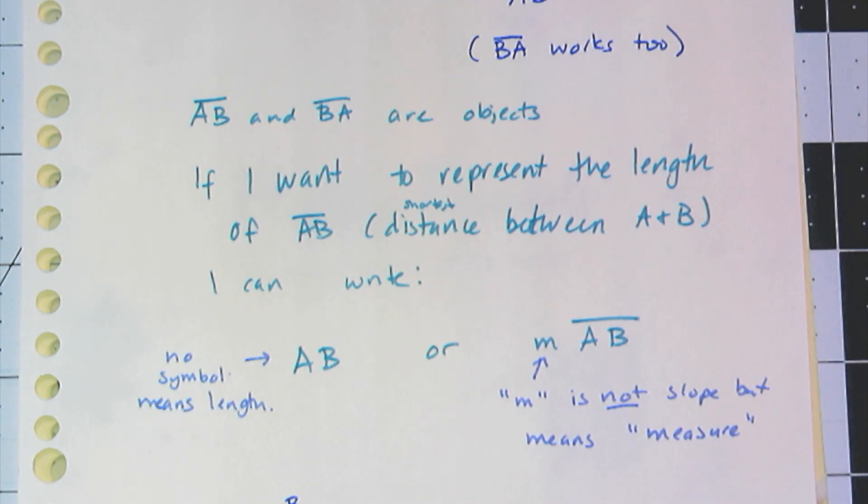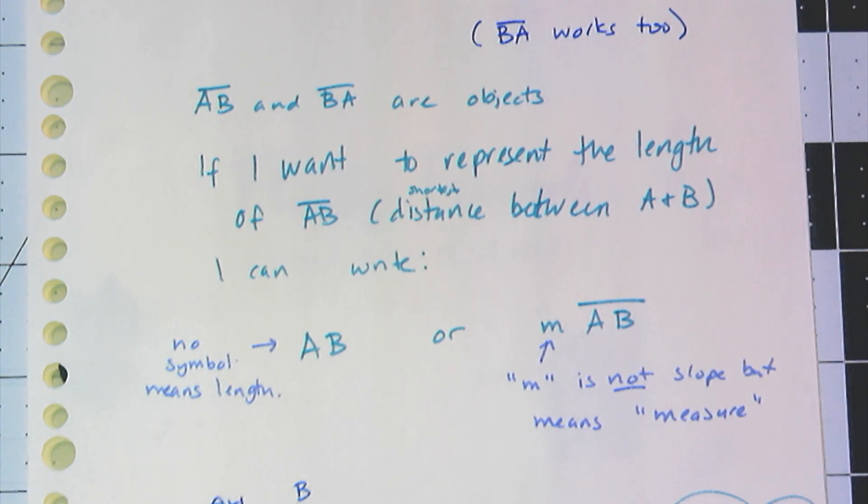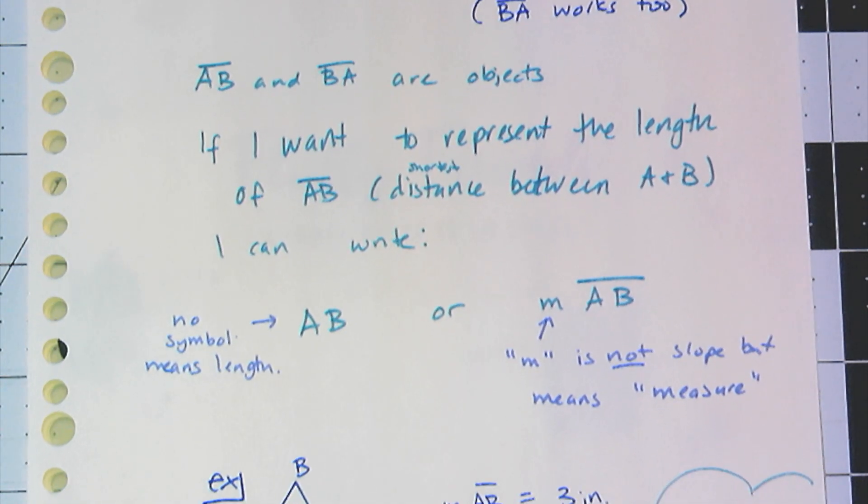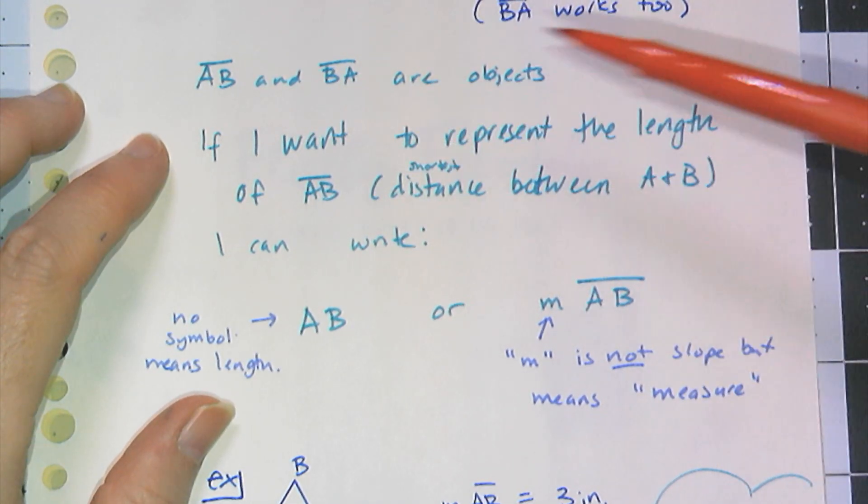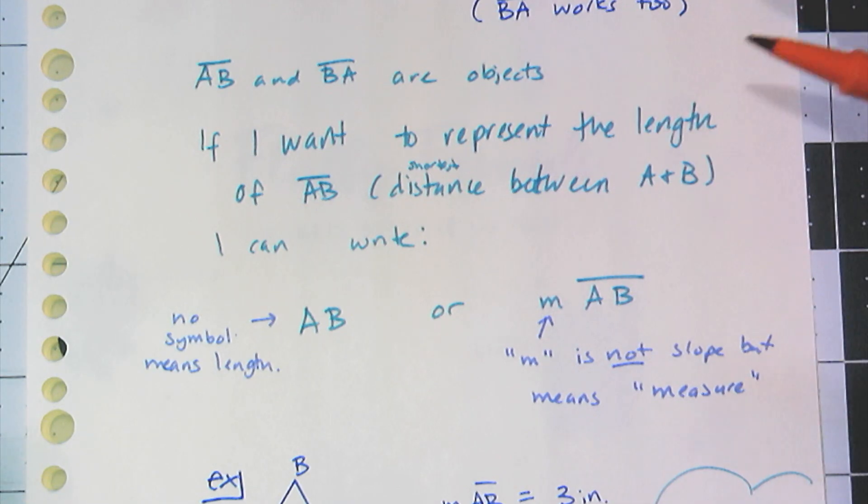Now that we have line segments, we can talk about this idea of congruence in geometry. Line segment AB and BA are objects, they are things. They're not numbers, they're not quantities.